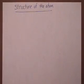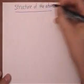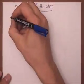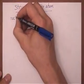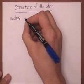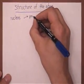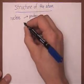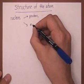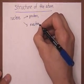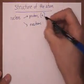Let's look really quickly at the structure of an atom. The atom is composed of a nucleus, which has protons and neutrons. Protons are positively charged particles.